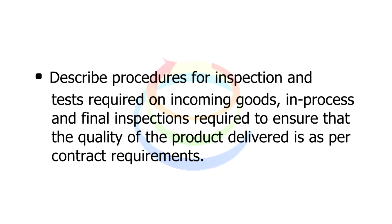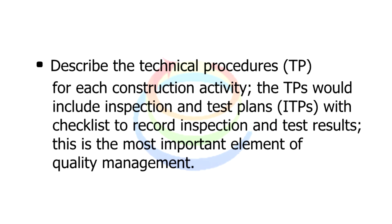Describe procedures for inspection and tests required in incoming goods, in-process, and final inspections required to ensure that the quality of the product delivered is as per contract requirements. Describe the technical procedures, or TPs, for each construction activity. The TPs would include inspection and test plans, or ITPs, with checklists to record inspection and test results. This is the most important element of quality management.